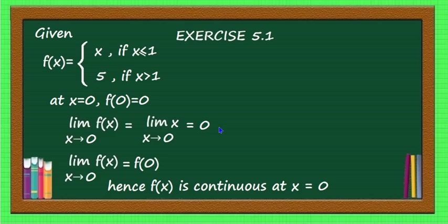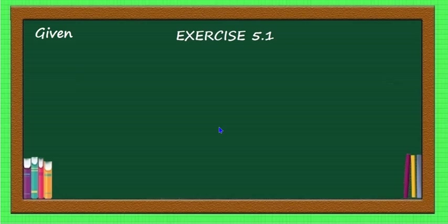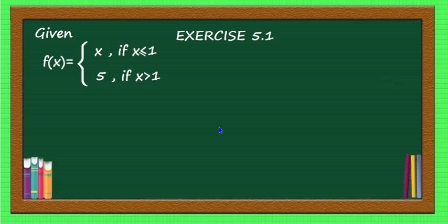Similarly, check continuity at the other two points. The function is f(x) = x when x ≤ 1, and 5 when x > 1. At the second point x = 1: since 1 ≤ 1, the function is defined as x, so f(1) = 1.